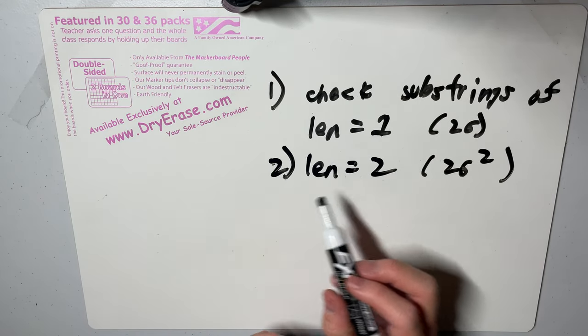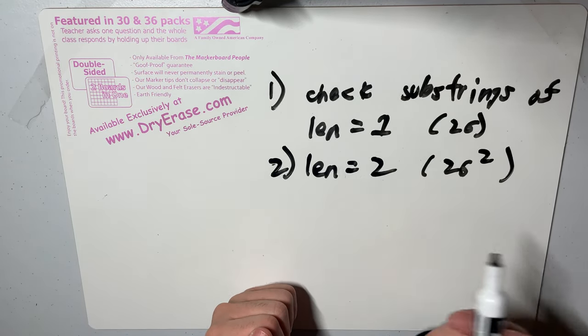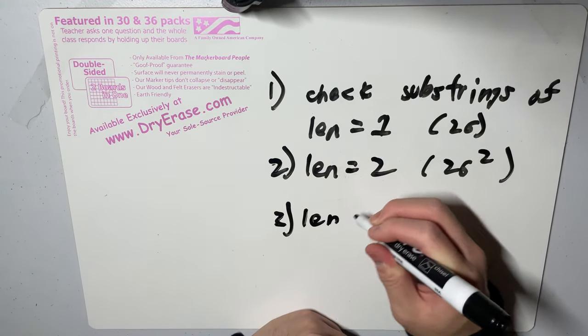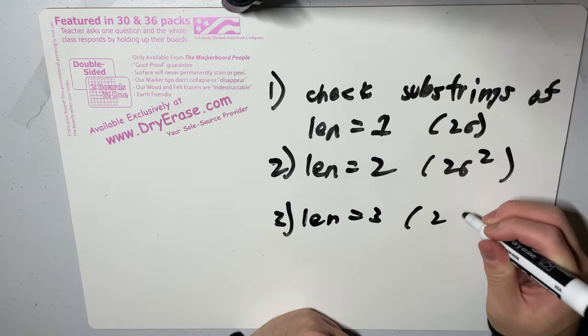And then we repeat the same process. If we find out that all of these strings appear as some substring in our input, then the last step is to check all substrings of length three, which we know is 26 cubed.